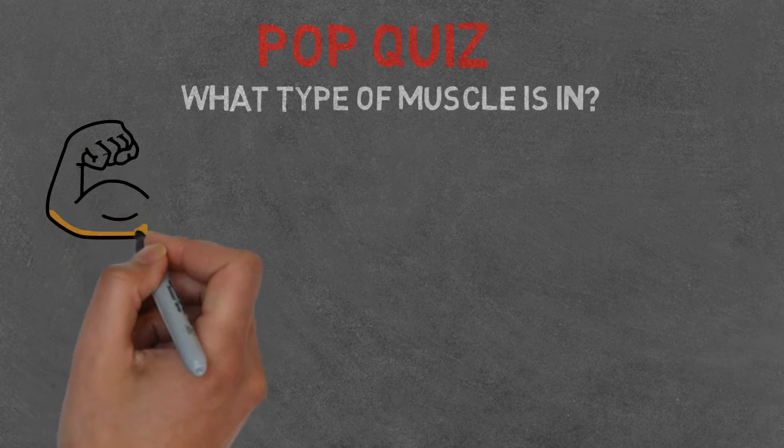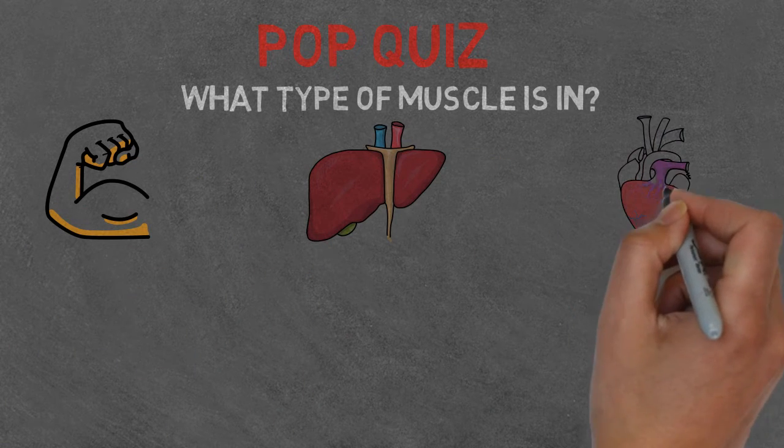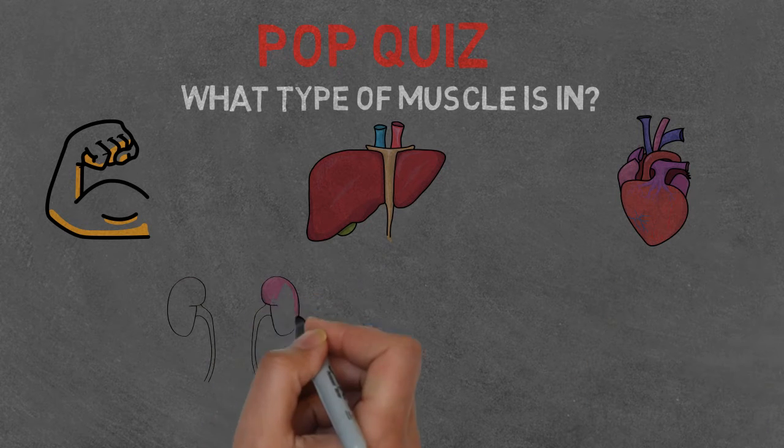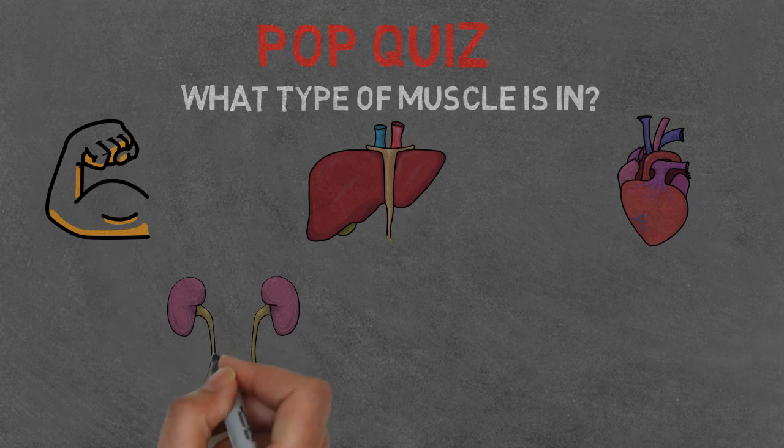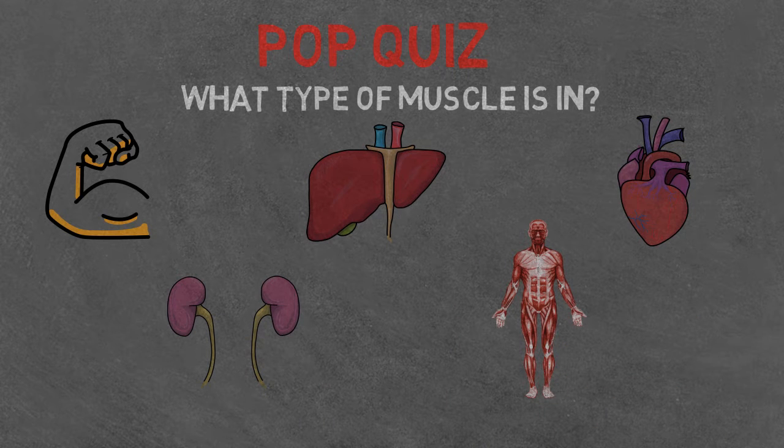Bicep. Liver. Heart. Kidneys. External muscles. Now let's go through the answers.